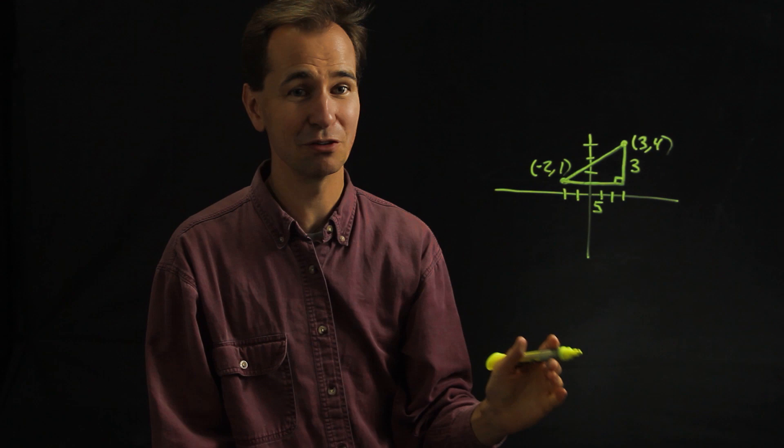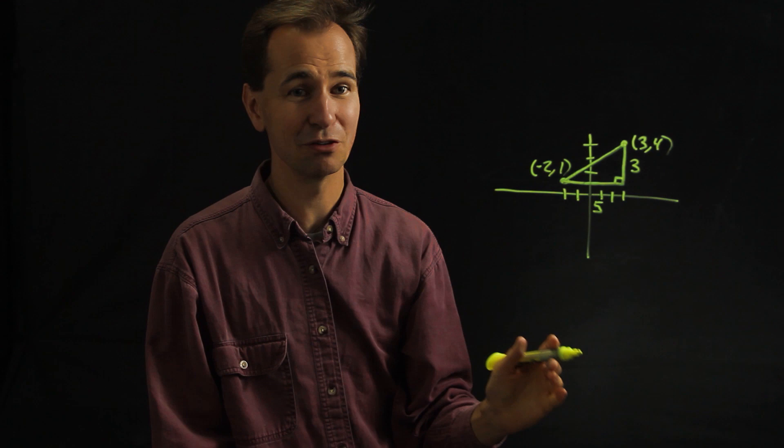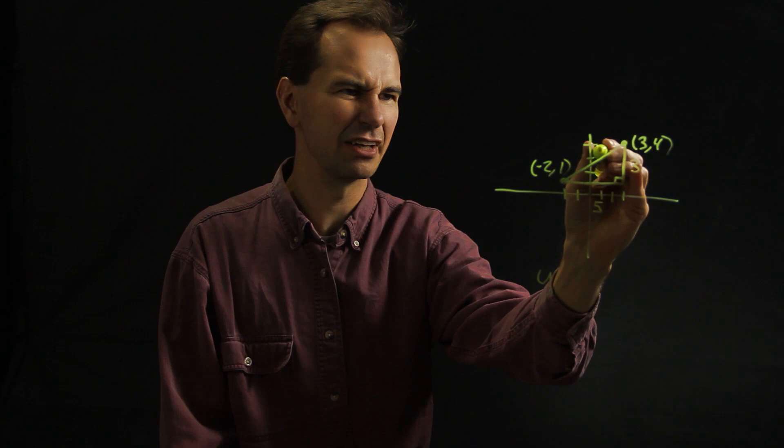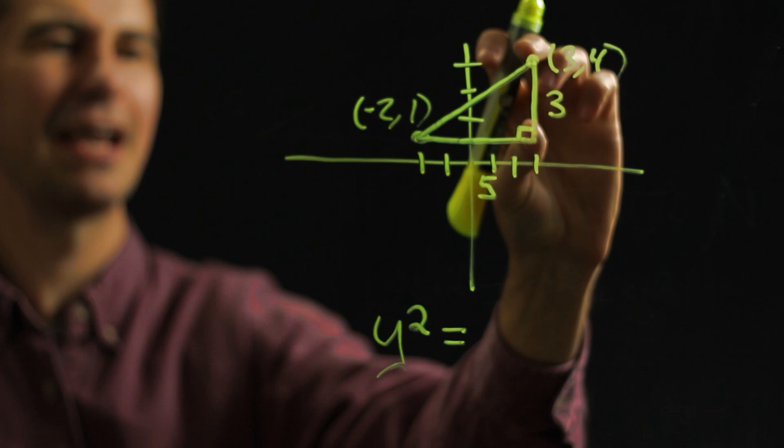And the Pythagorean theorem tells us that if you have a right triangle, the hypotenuse of that right triangle, let's call that length y, if you square that length you get the same thing as when you square each of those other sides and add them together.